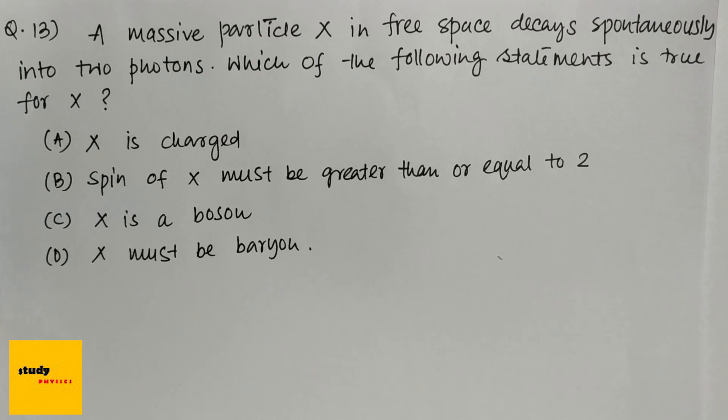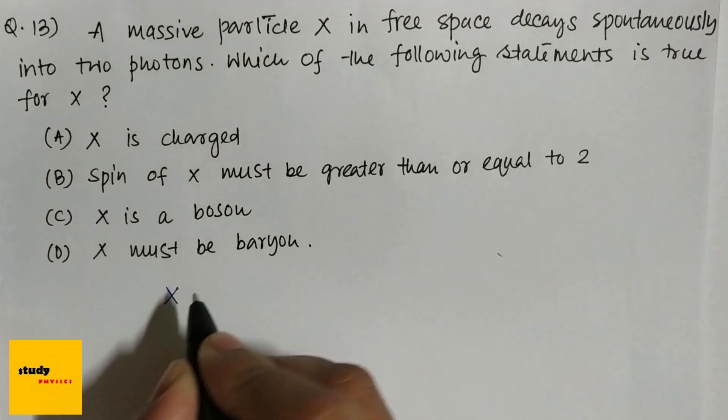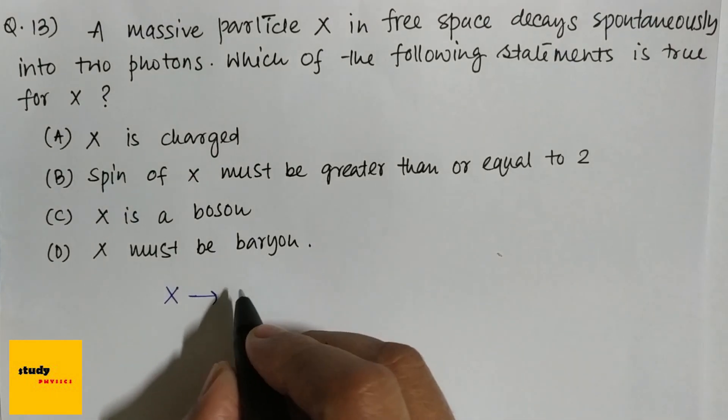Option C is X is a boson, and D is X must be a baryon. So X is decaying into photons, that means gamma.